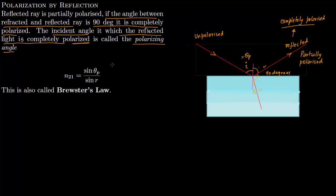Writing down Snell's law: the angle of incidence is theta_p, the angle of refraction is r, and n21 is n2 over n1, where n2 is the refractive index of material 2 — that is, glass — and n1 is the refractive index of material 1, say air, if you are going from air to glass.